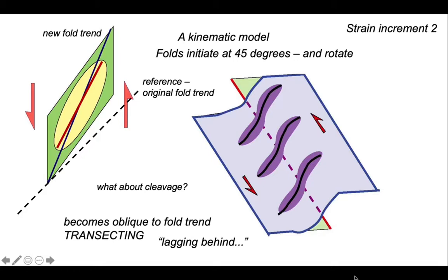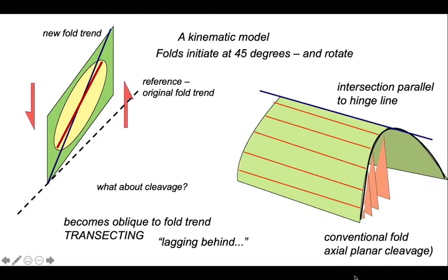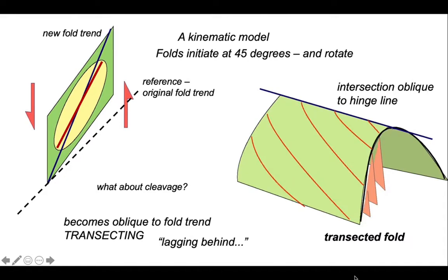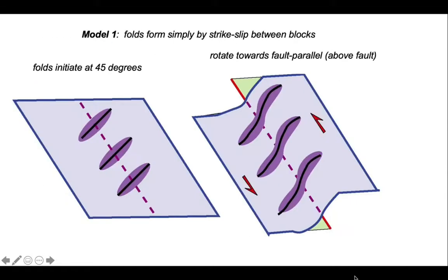So let's go back to our block diagram of cleavage and folds. This is the pattern for conventional folding with axial planar cleavage. This is the pattern for a transecting fold. You can see that the intersection line between cleavage and bedding is oblique to the fold hinge line.